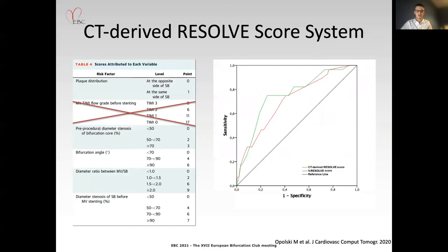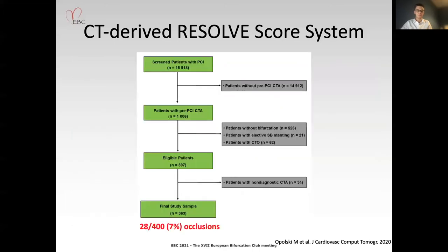To simplify and expand the application of non-invasive CTA for predicting side branch occlusion, we employed visual estimation of each constituent element of the original quantitative CTA Resolve score. The test sample comprised 400 bifurcation lesions in 363 patients, in whom a total of 28 side branch occlusions were noted.